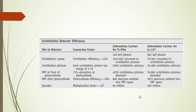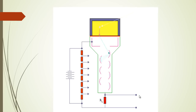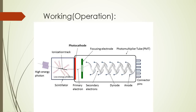That's how we can in principle measure the amount of energy deposited to our scintillator. When a high energy photon is incident on the scintillator, either part of its energy is absorbed or the whole energy is absorbed, depending on the interaction process. There are usually three interaction processes: photoelectric absorption, pair production, and Compton scattering. We will talk about all these in detail in a separate video.